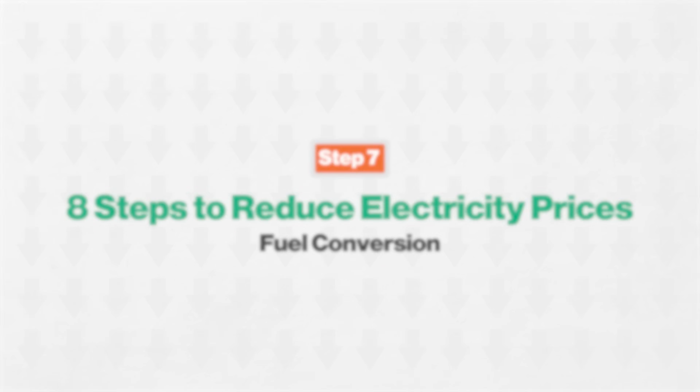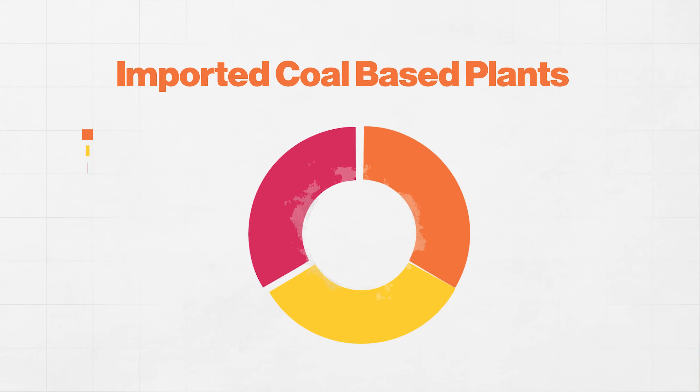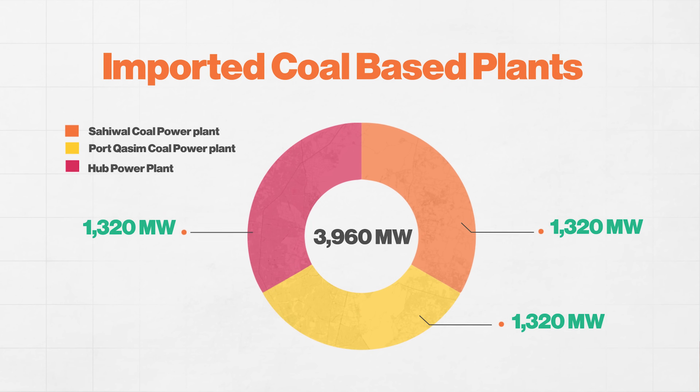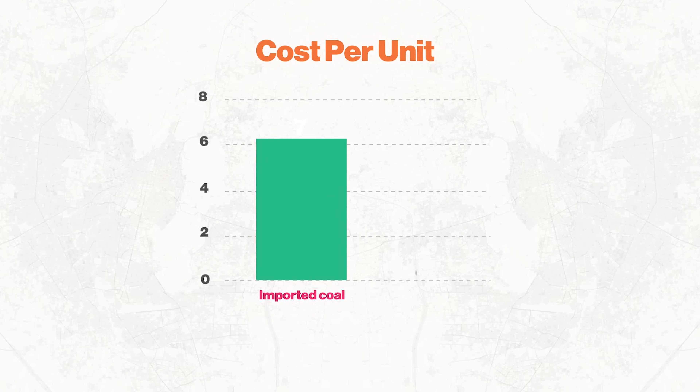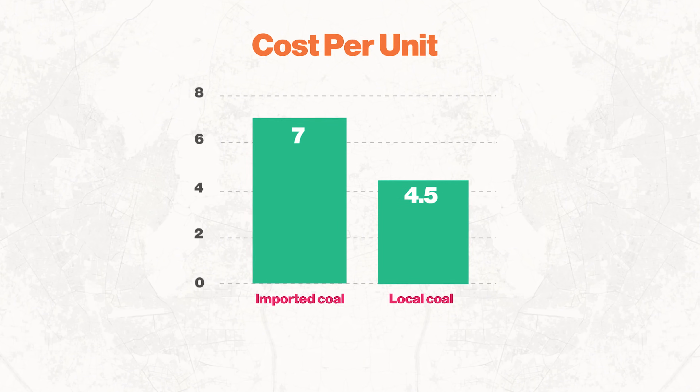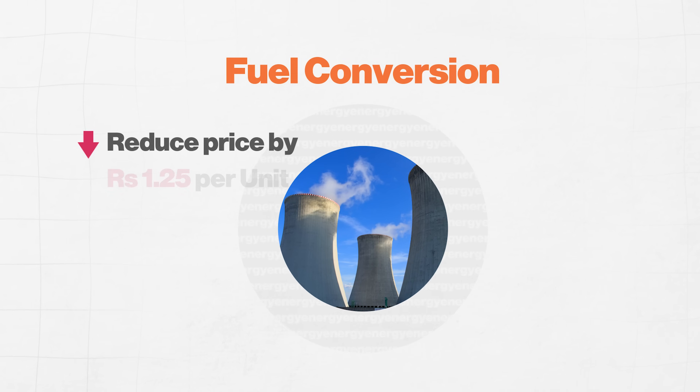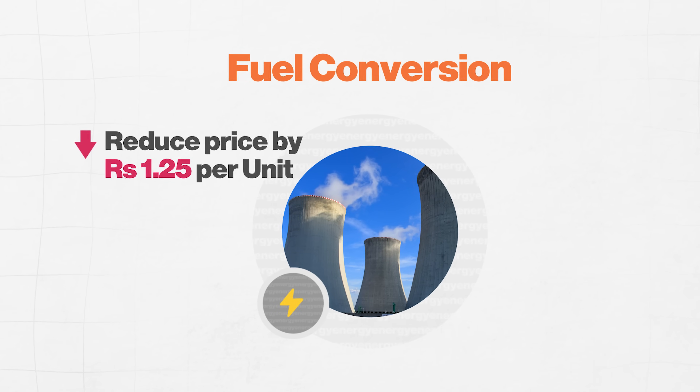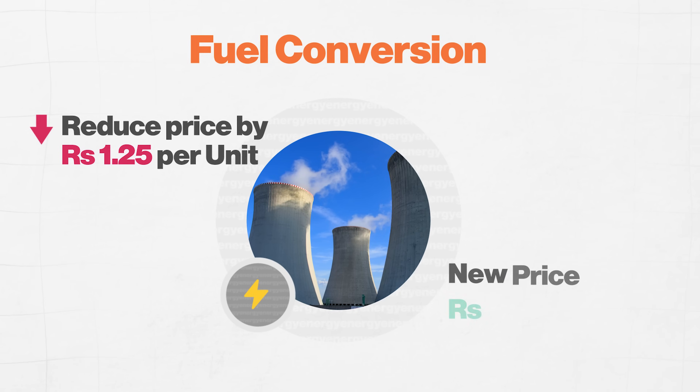Number seven: fuel conversion. We have the opportunity to convert 3 major imported coal-based power plants — producing about 4,000 megawatts — to local coal from Thar. The energy cost of these plants is currently about Rs.7.50 per unit. With a one-time investment of $480 million to expand the Thar mine, once that is done, the cost will come down to Rs.4.50 per unit, saving Rs.1.25 per unit in our tariff. The new price is Rs.34.65 per unit.